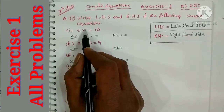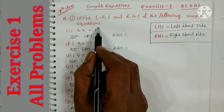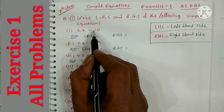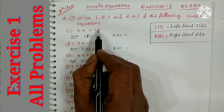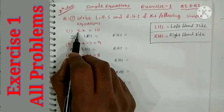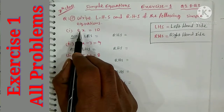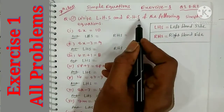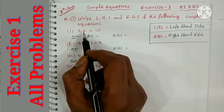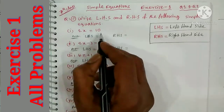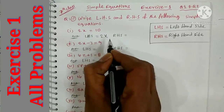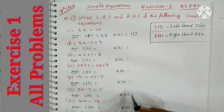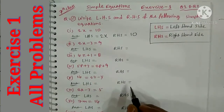So in this equation, 2x is LHS and 10 is RHS because 2x is on the left side and 10 is on the right side. LHS is 2x and RHS is 10. That's the answer — we have identified the correct LHS and RHS.